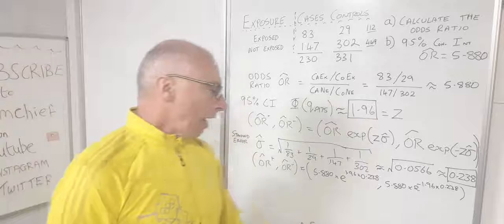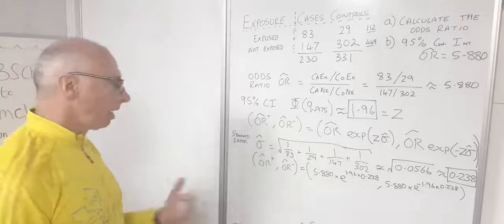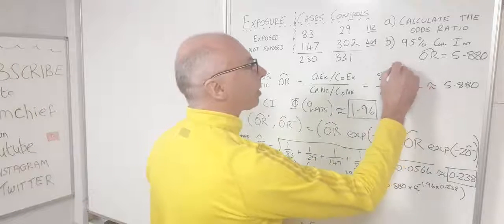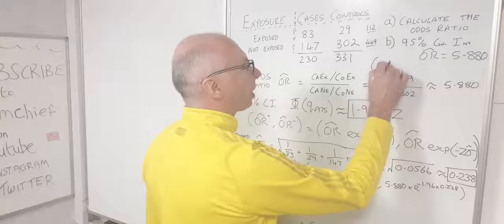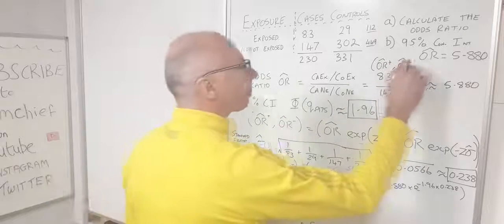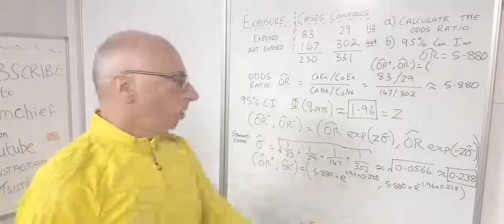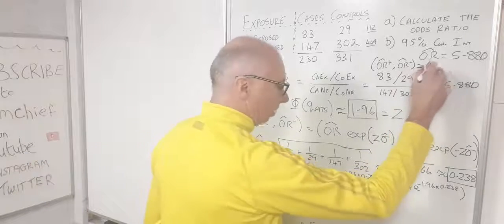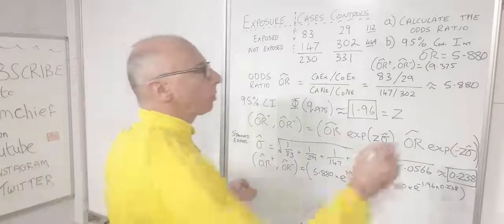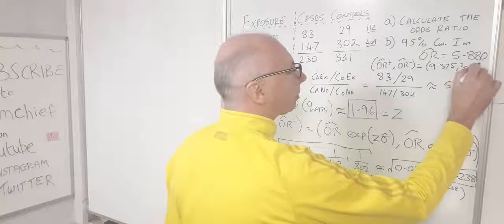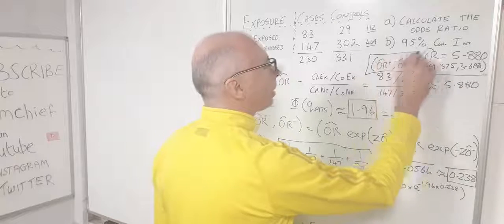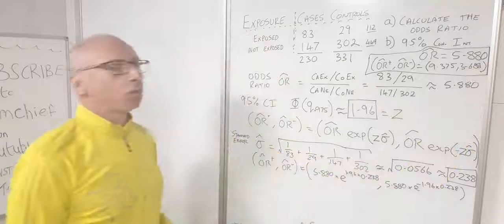Plugging those into your calculator gives an upper value of 9.375 and a lower value of 3.688. So our 95% confidence interval is [3.688, 9.375]. That answers the numerical part of the question, but now we need to draw a conclusion.